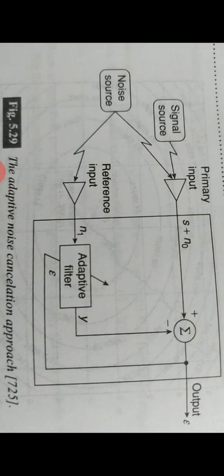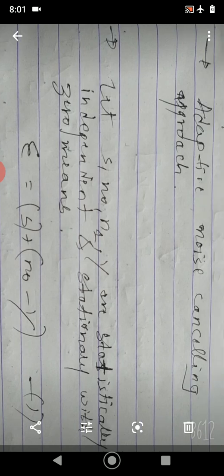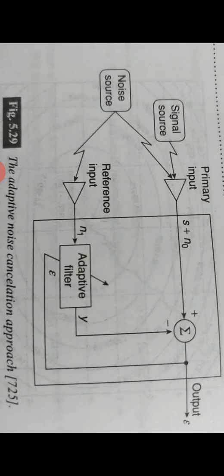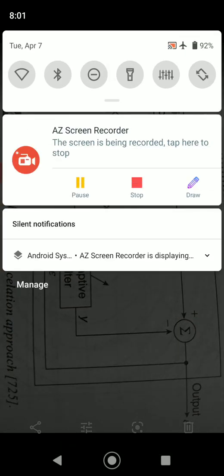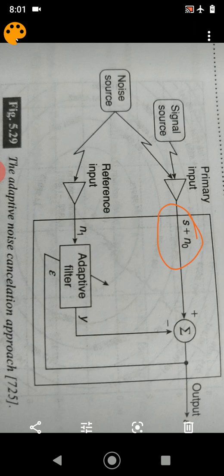We have s, n₀, n₁, and y. These are statistically independent and stationary, meaning they have zero mean. The output epsilon is s + n₀ minus y, since the noisy primary input s + n₀ has y subtracted from it, giving us our first equation: ε = s + n₀ − y.